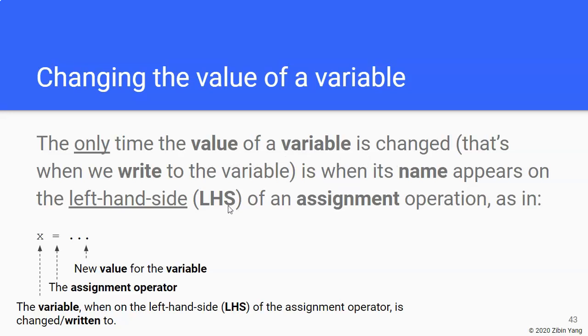...is when its name appears on the left-hand side of an assignment operator. And using this syntax that we have seen a few times now, the variable here is x, that's the name of the variable, it can be any variable, doesn't have to be named x. And this is the assignment operator, and we can assign it whatever value we want to assign to the variable x.